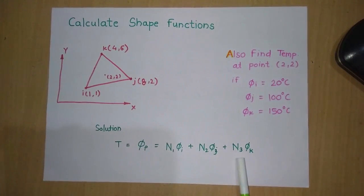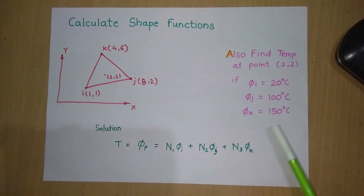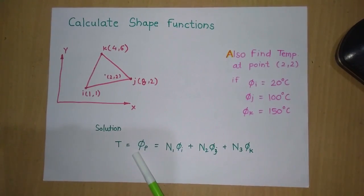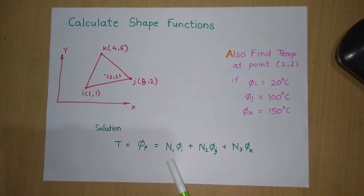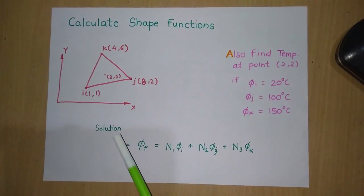Here N1, N2, and N3 are the shape functions, and φi, φj, φk are the nodal temperatures. We have the three nodal temperature values, but we need to identify the three shape functions in order to find the temperature at point P.